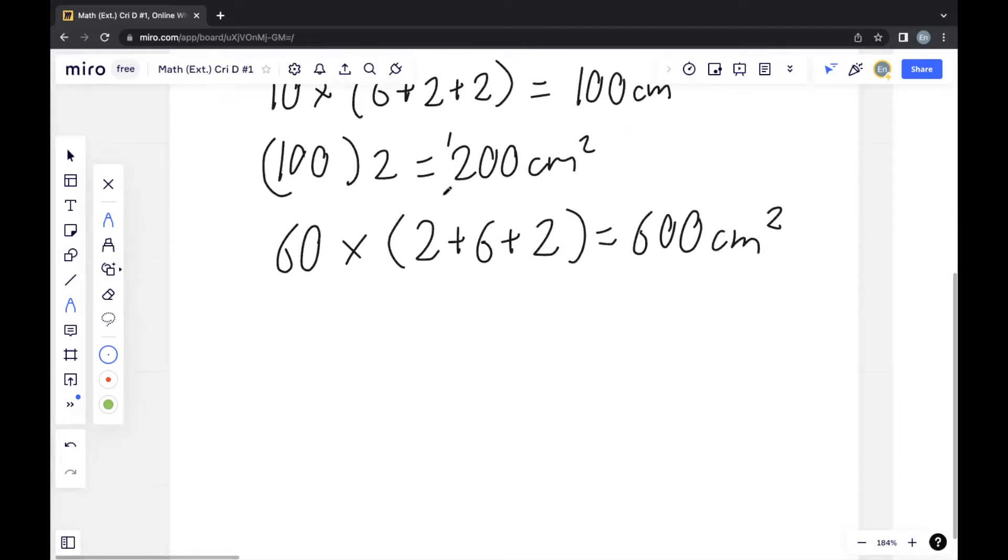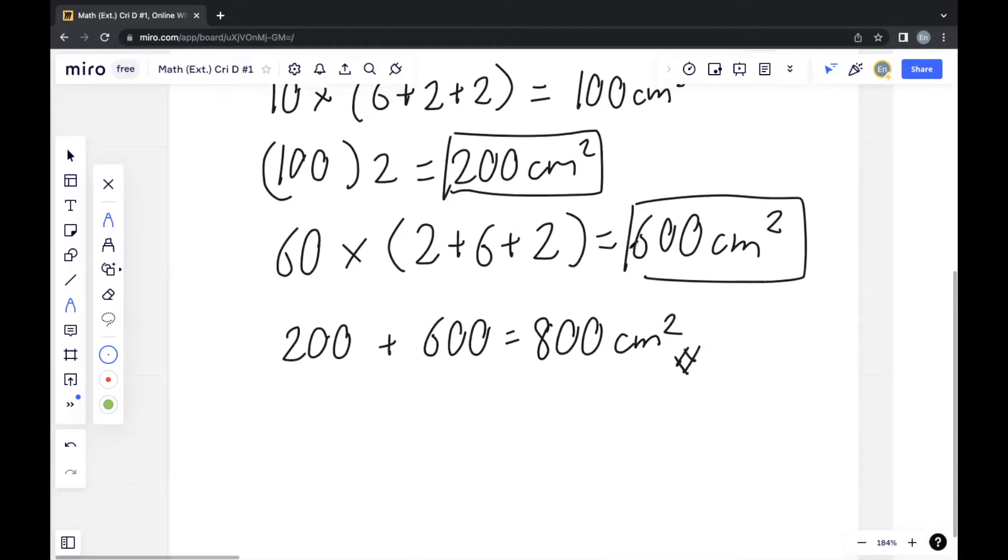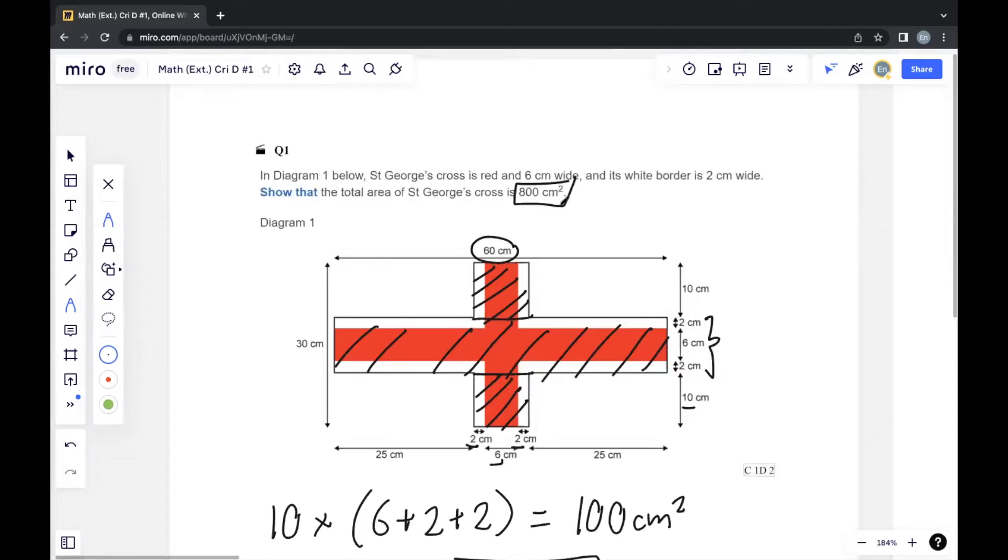To get the final area, we add both of these, which gives us 800 cm², just as the question mentions.